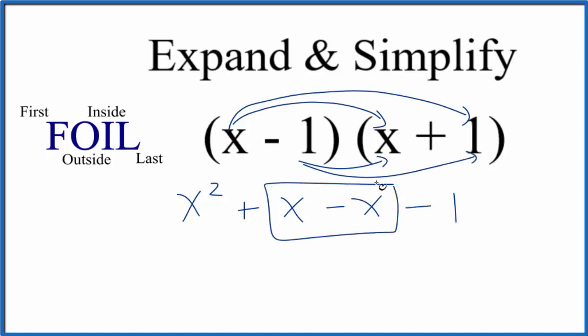Since these two are the same, we can just combine those, and we end up with x squared, and the x and the negative x, they cancel out, so it's just going to be x squared minus 1.